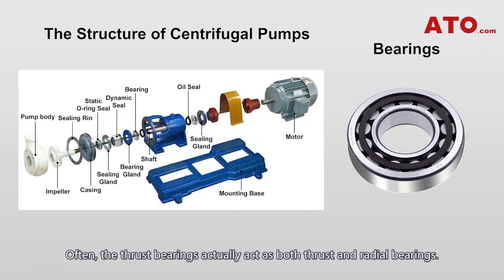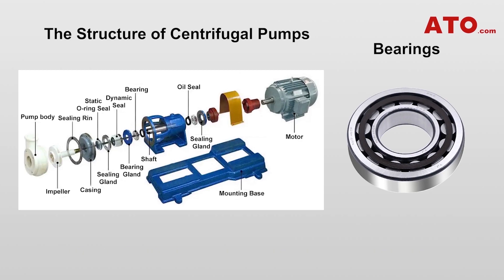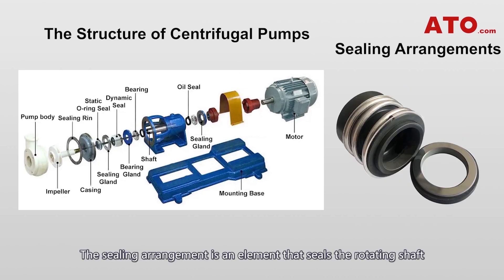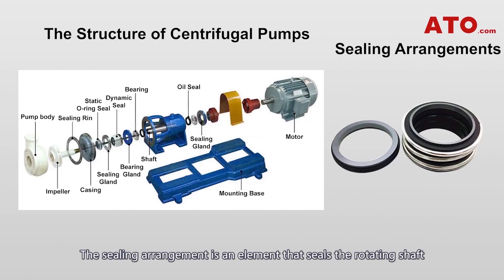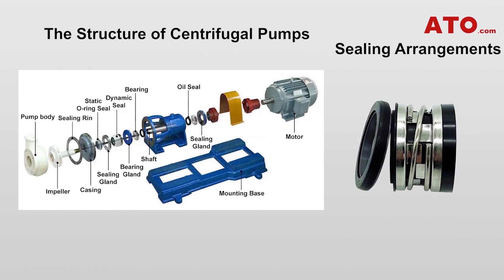Often, the thrust bearings actually act as both thrust and radial bearings. The sealing arrangement is an element that seals the rotating shaft as it passes through the non-rotating casing of the centrifugal pump.